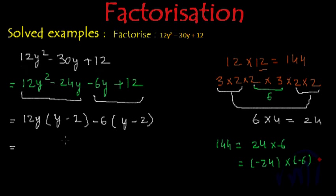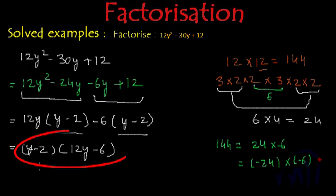And now from this expression I can take y minus 2 common and again inside the bracket we will have 12y minus 6. So these are the factors of 12y squared minus 30y plus 12.